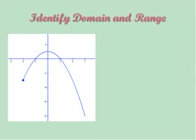Let's look at identifying domain and range for graphs. Identifying domain and range for a set of ordered pairs is relatively quick because you're just identifying the x values for the domain and the y values for the range. When you have a graph, it can be a little bit trickier. We're going to look at the domain first, using set builder notation. Set builder notation uses braces, and since domain deals with x values, you have x with a bar meaning 'such that,' and then we fill in what the domain is.